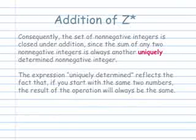So non-negative integers are said to be closed under addition because whenever you add two non-negative integers, you always get another non-negative integer.